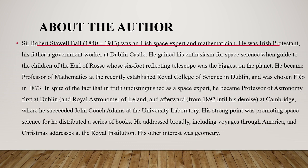Ball was chosen as a fellow researcher in 1873. Despite being undistinguished as an astronomer, he became professor of astronomy first at Dublin, then Royal Astronomer of Ireland, and afterward moved to the University of Cambridge where he succeeded John Couch Adams. His strong point was promoting science through a series of books; he lectured broadly, including tours through America and Christmas addresses at the Royal Institution. His other interest was geometry.